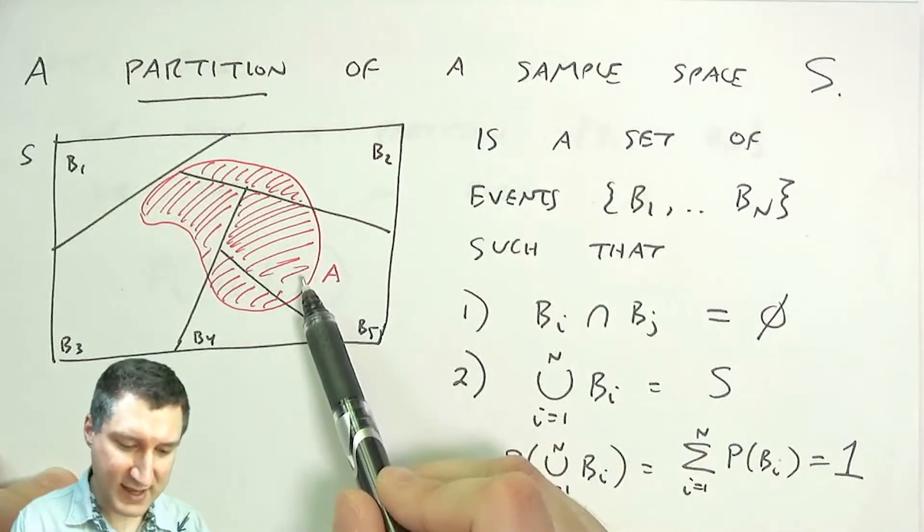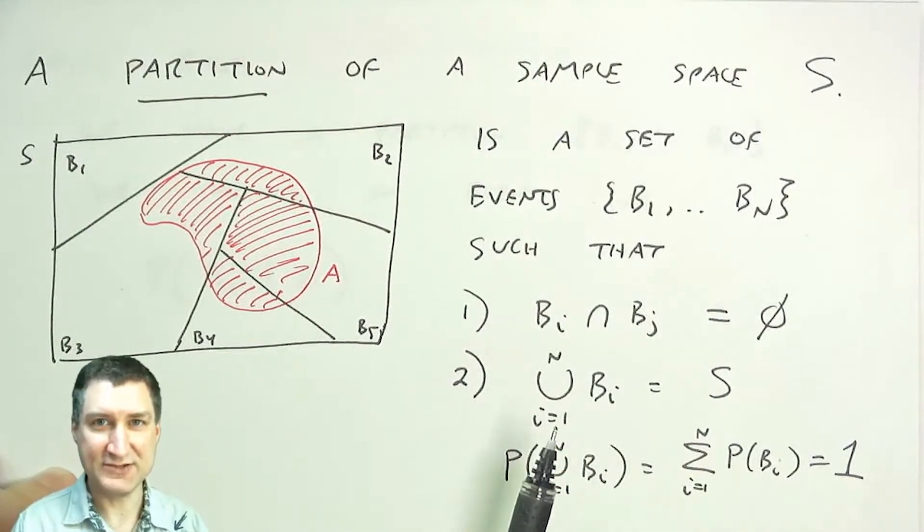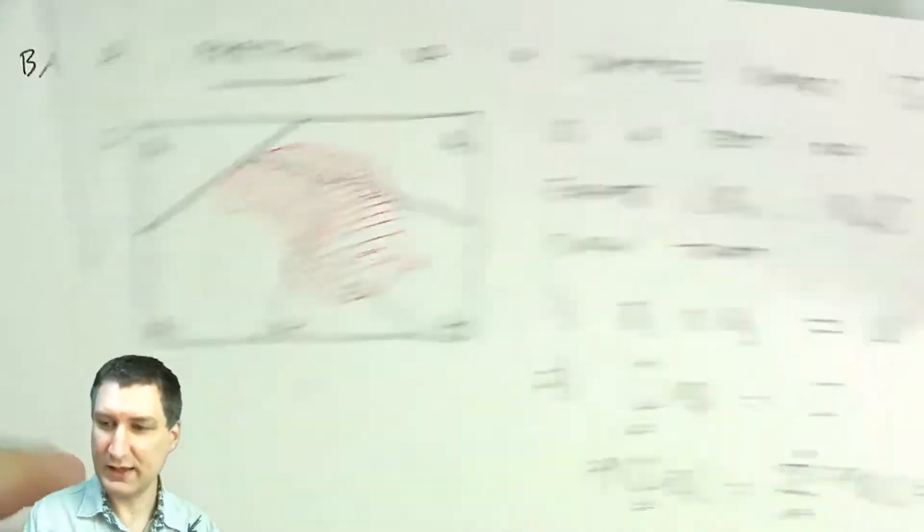So in this case, for example, seeing A immediately rules out that B1 occurred, even though B1 previously had some non-zero probability.